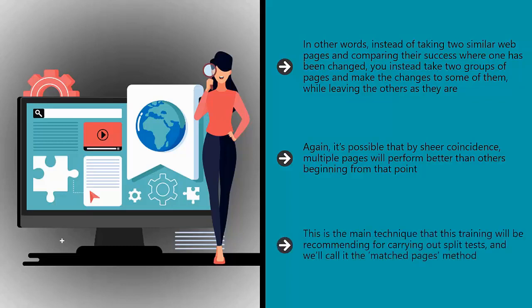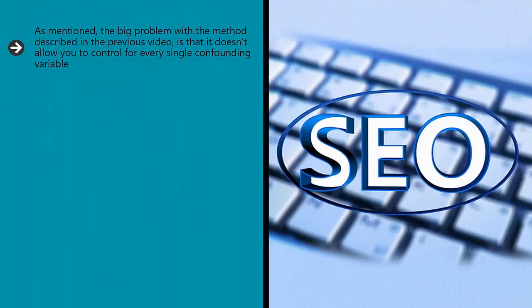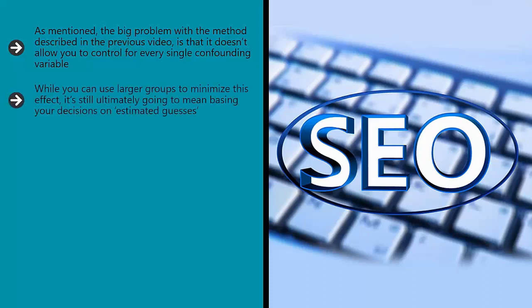This is the main technique that this training will be recommending for carrying out split tests, and we'll call it the matched pages method. The technical bit — using redirects. As mentioned, the big problem with the matched pages method is that it doesn't allow you to control for every single confounding variable. While you might run lots of tests with very similar pages, they are still different pages and they might still succeed or fail based on other factors. While you can use larger groups to minimize this effect, it's still ultimately going to mean basing your decisions on estimated guesses.